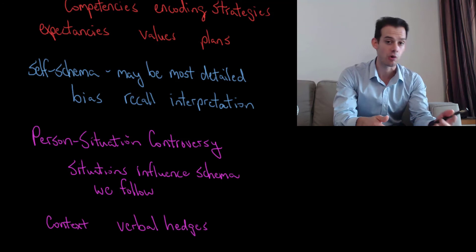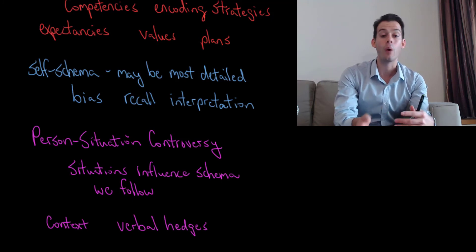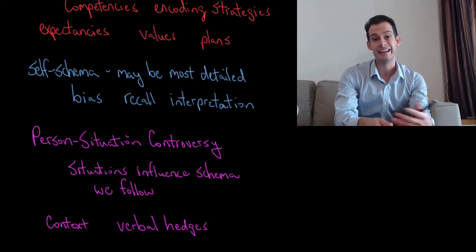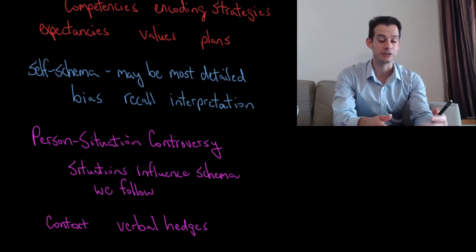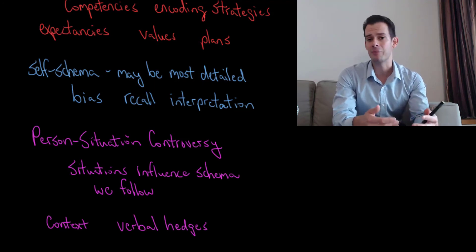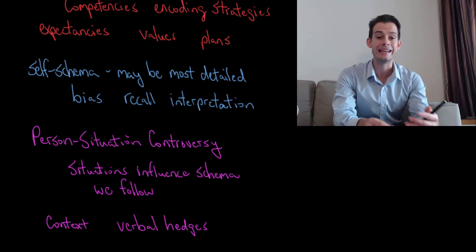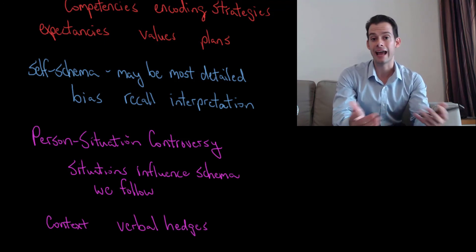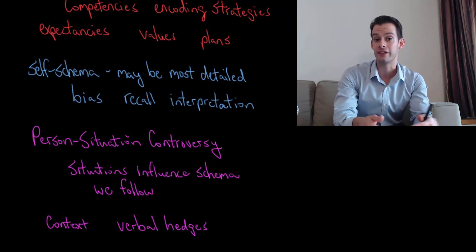Or we might say Jane is aggressive when confronted — that means she's not just aggressive all the time, but if you confront her about something, you can expect her to be more aggressive in responding. This shows an everyday example of how we recognize the person-situation controversy, and that it's hard to pin down certain personality aspects without context or reference to the situation they appear in.